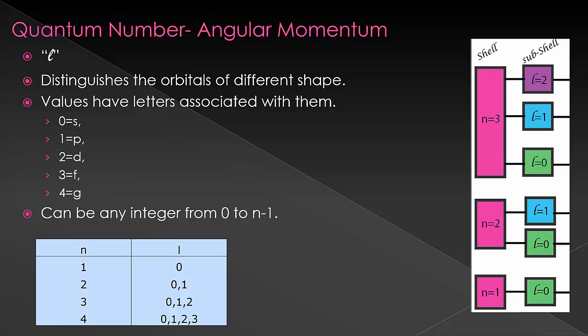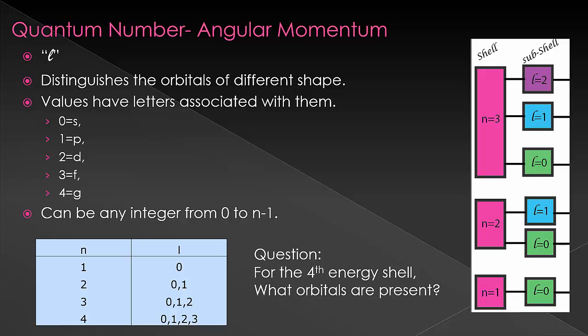If you have N equal to four, for example, L could go all the way up to three. That means we still have zero, one, two, and three as quantum numbers available, which means that we have S, P, D, and F orbitals. So a question I could ask is: for the fourth energy level, what orbitals are present? You could say L must be zero, one, two, and three, leaving us with S, P, D, and F.